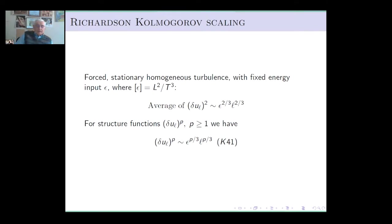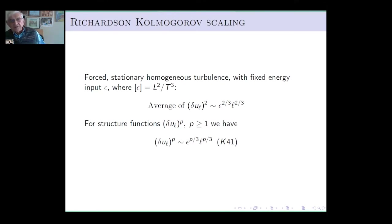Let me turn for a second to what I call Richardson-Kolmogorov scaling, in which we assume that in the inertial range — since viscosity is not playing a role — in the case of stationary homogeneous turbulence we should see a constant flux of energy through the system. That gives us some dimensions to work with.